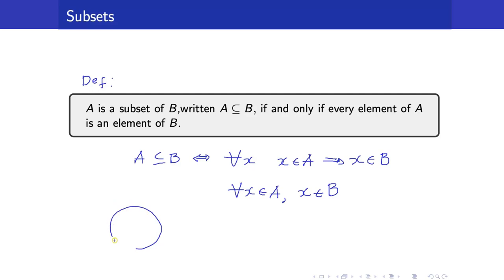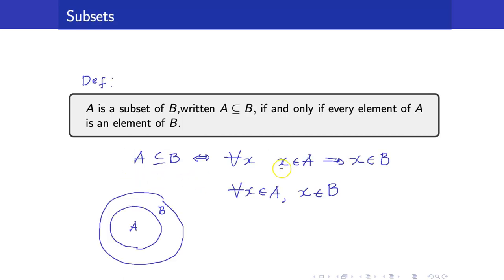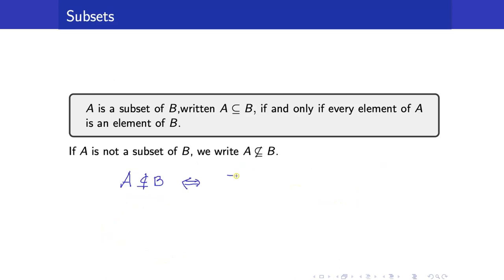Using Venn diagrams, A ⊆ B means all elements of A are contained inside B. If A is not a subset of B, we use the notation A ⊄ B. In symbolic form, the negation is: there exists an x in A such that x is not in B.